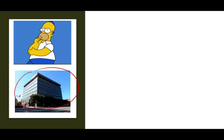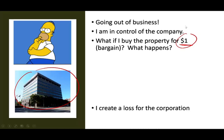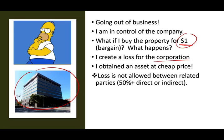Homer Simpson is going out of business and Homer owns this building. Homer controlled the company — he has controlling ownership, so he makes all the decisions. What if he buys this building for a dollar? He would create a loss for the corporation — whatever the basis is, a dollar is going to be less than that — and Homer obtained that building for a dollar. Is this allowed? Losses are not allowed between related parties.